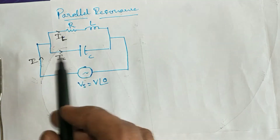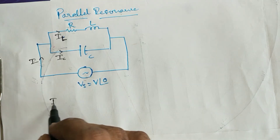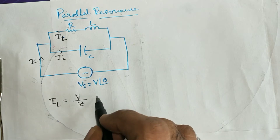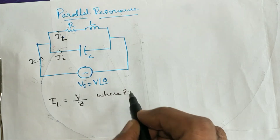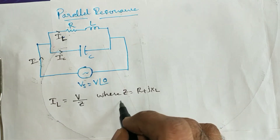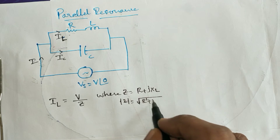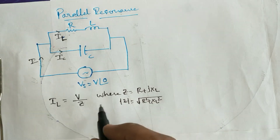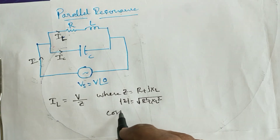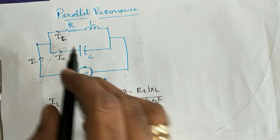Since the two branches are connected in parallel, the current passing through the inductor circuit I_L is given as V/Z, where Z is the impedance of the series circuit given as R + jX_L. The magnitude of Z is equal to the square root of R² + X_L², and the power factor angle phi satisfies cos(phi) = R/Z.